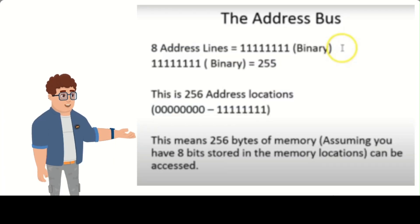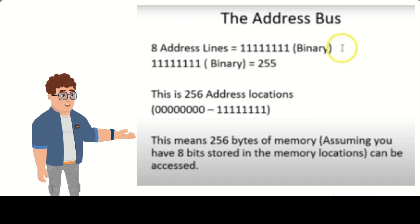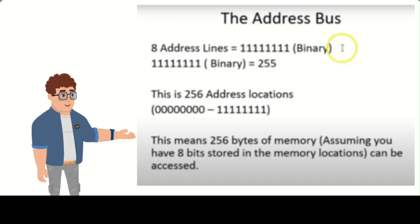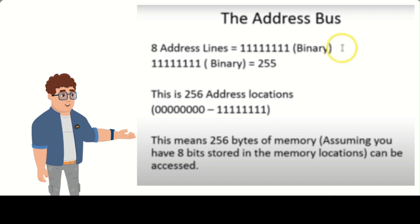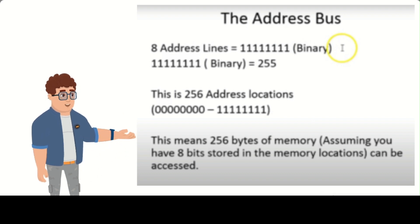The number of wires or lines in the address bus is determined by the maximum amount of memory that a computer can access. For example, a computer with a 32-bit address bus can address up to 4GB of memory, while a computer with a 64-bit address bus can address up to 16GB of memory.